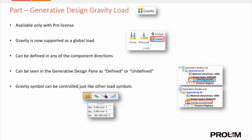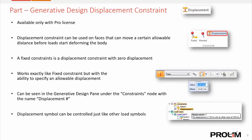A gravity load has been added to generative design — this is only available with the Pro license and can be added as a global load, defined in any one of the component directions. We also now have a displacement constraint, again only available with the Pro license. This can be used on faces that we want to move a certain distance or direction before the load starts deforming the body. A fixed constraint is also a displacement constraint with zero displacement, but with the ability to specify an allowable displacement. This can be seen in the generative design pane in a constraints node with the displacement number next to it.